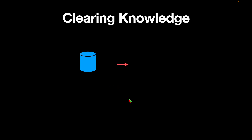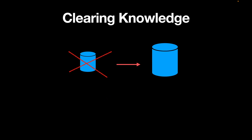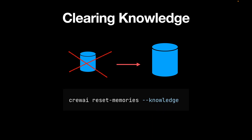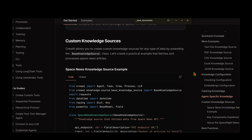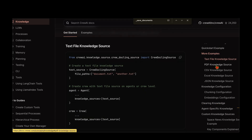CrewAI also provides the option to clear the knowledge. For example, let's say you have data that has been embedded and stored as knowledge, but you decide to move on to a bigger dataset. You want to throw away the old knowledge and build a larger knowledge store. All you have to do is run crewai reset-memories --knowledge and the old knowledge will be removed, so you can upgrade with the latest one.